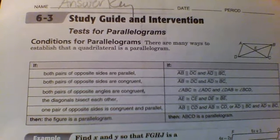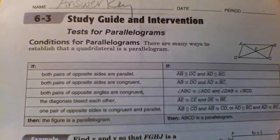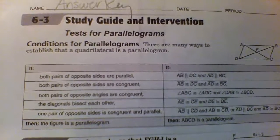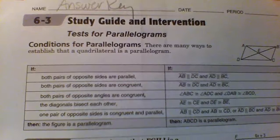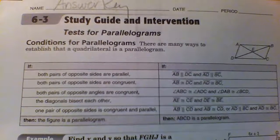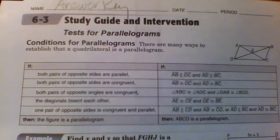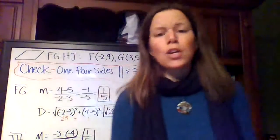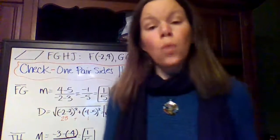If both pairs of opposite angles are congruent, it's a parallelogram. If the diagonals bisect each other, it's a parallelogram. Or if one pair of opposite sides are both congruent and parallel, then it's a parallelogram. So if you take a look at that, you only ever need to prove one of those things.